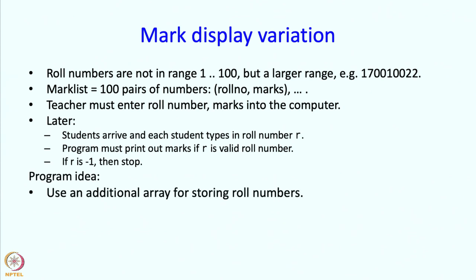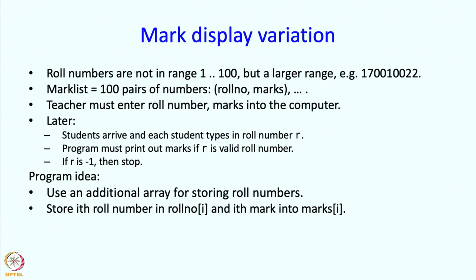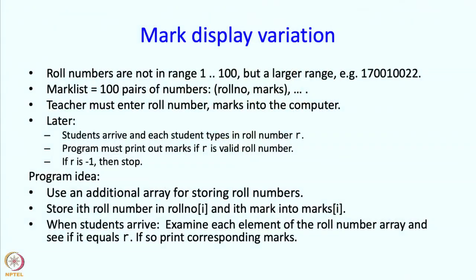So what is the program idea? We should use an array for storing marks, but we now also need an array for storing roll numbers. The ith roll number the teacher enters will be stored in element rollnumber[i], and the ith mark will be stored in marks[i]. So the data for student i will be present in rollnumber[i] and marks[i]. When the student arrives, we examine each element of the roll number array and see if it equals r. If so, we print the corresponding marks; otherwise we print a message.